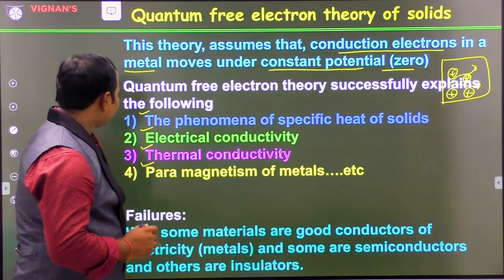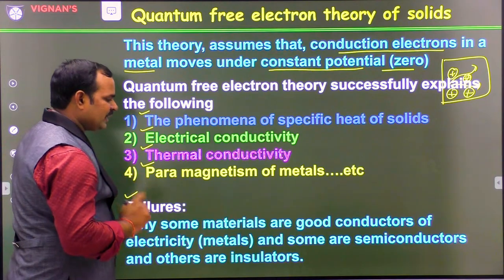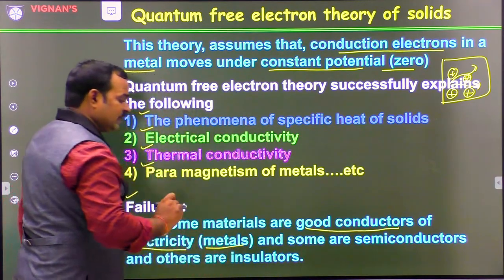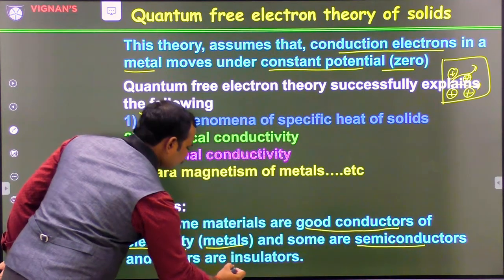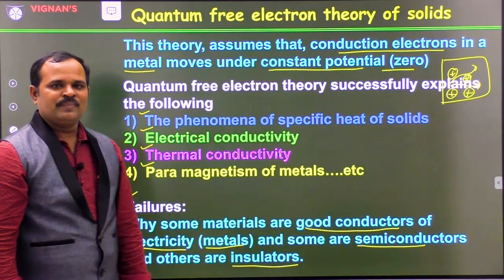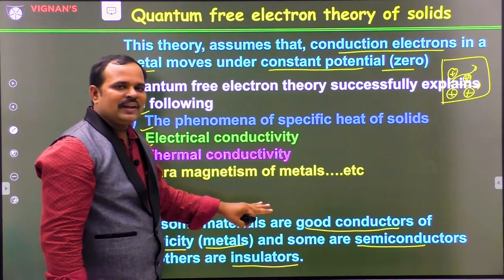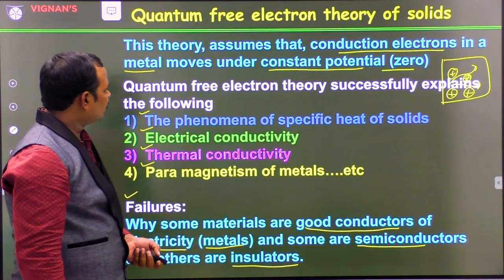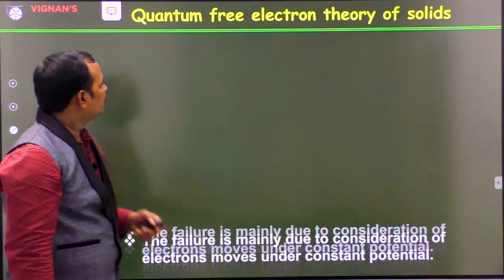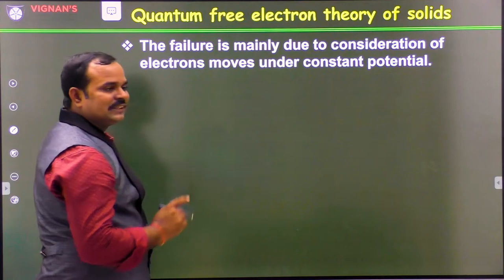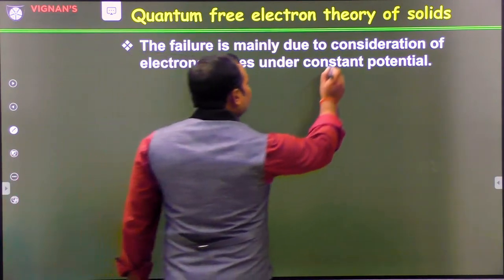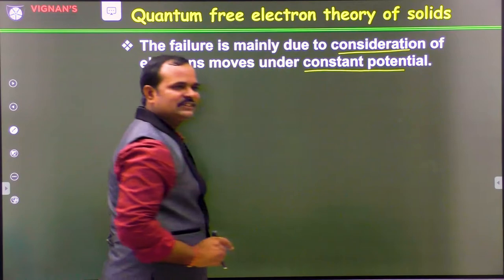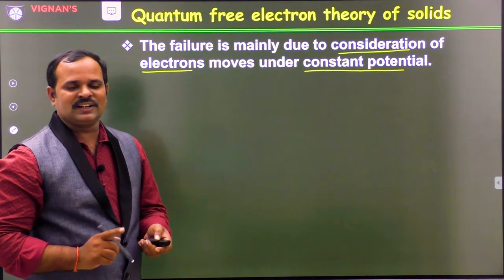However, this theory is unable to explain why some materials are good conductors of electricity — that means metals — and some are semiconductors and some are insulators. This is the big question that Sommerfeld was not able to explain based on his assumptions. The failure of the quantum free electron theory is mainly because of the consideration that electrons move under constant potential. This is what he assumed, but in a real crystal this is not true.